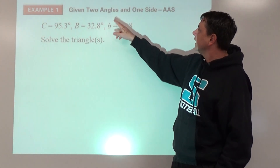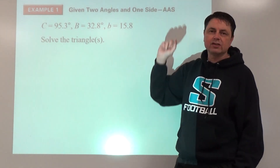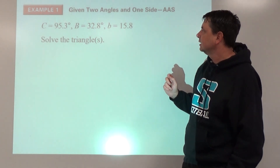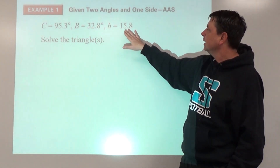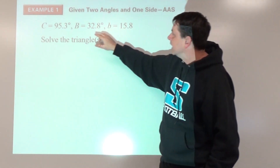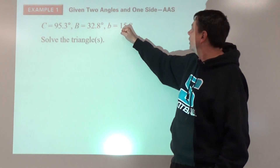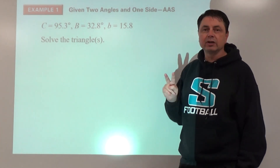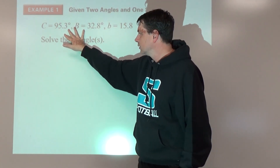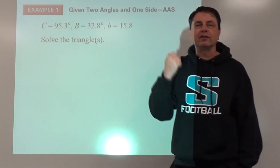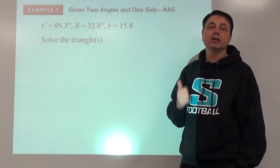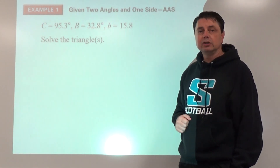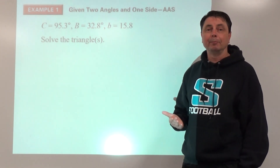Given two angles and one side — for case one, it really doesn't matter if it's angle-side-angle or angle-angle-side. Anytime you're given two angles, we immediately go after the third angle. We know we can do that by the triangle angle sum theorem, which says the three angle measures have to add up to 180 degrees.